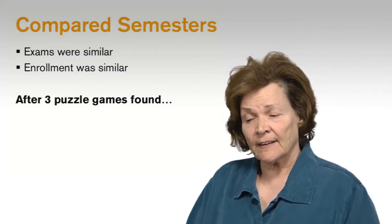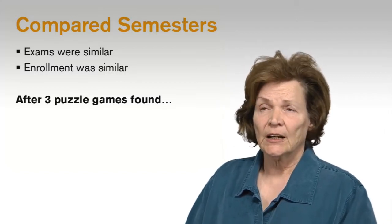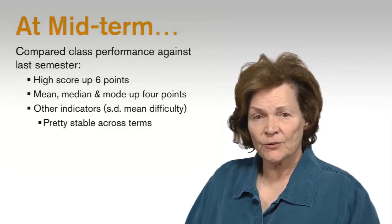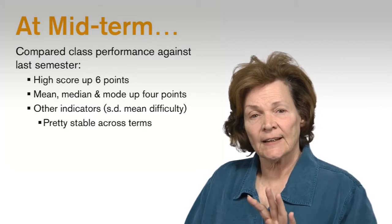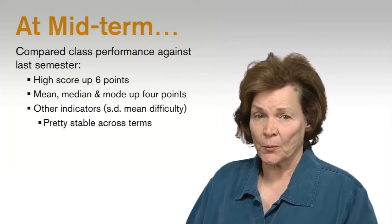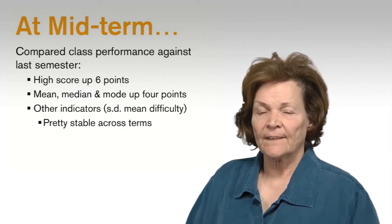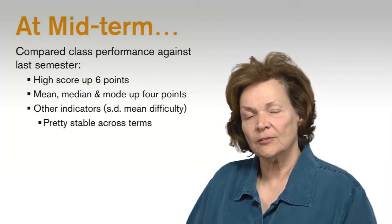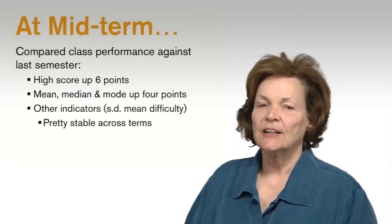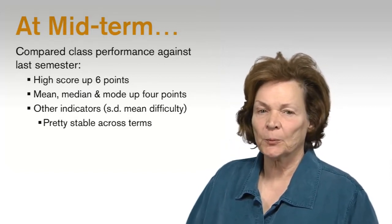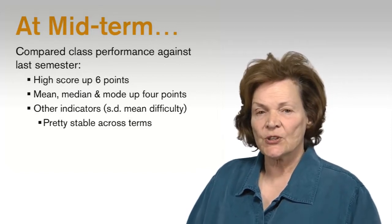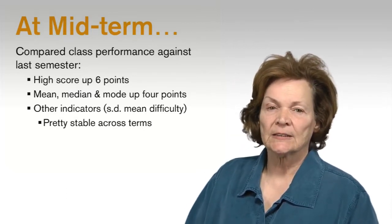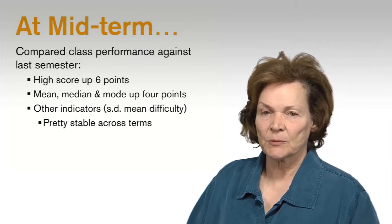At the end of basically the midterm period, after students had completed the midterm and three games, what we found was that the highest score in the course was up six points. The mean, median, and mode in the course with the games were all up four points, while all of the other indicators that we had, standard deviation, the mean difficulty, were pretty stable across the two semesters. So what we found was an increase in student performance without any apparent decline in the difficulty of the material that they were getting.